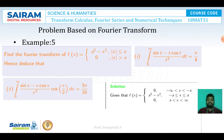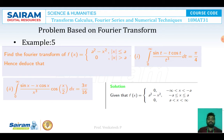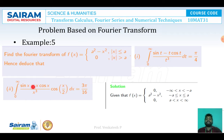Example number 5. Find the Fourier transform of f(x) = a² - x², with the condition |x| ≤ a, and 0 for |x| > a. Hence deduce that ∫₀^∞ (sin x - x cos x)/x³ · cos(x/2) dx = 3π/16, and also that ∫₀^∞ (sin t - t cos t)/t³ dt = π/4.